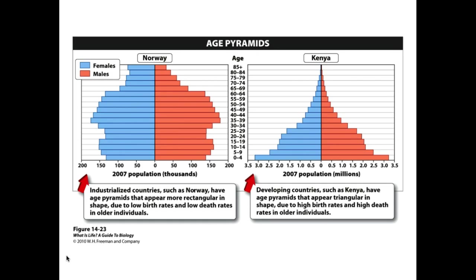In Kenya, by contrast, there is a tremendous base reflecting a huge birth rate, and a very narrow top showing few people living to advanced age. An important thing to notice is that the units are different — Norway goes up to 200,000 whereas Kenya goes up to 3.5 million. Kenya has better than six million births per year, while Norway has around 250,000 births per year — extreme differences between first world and third world countries.